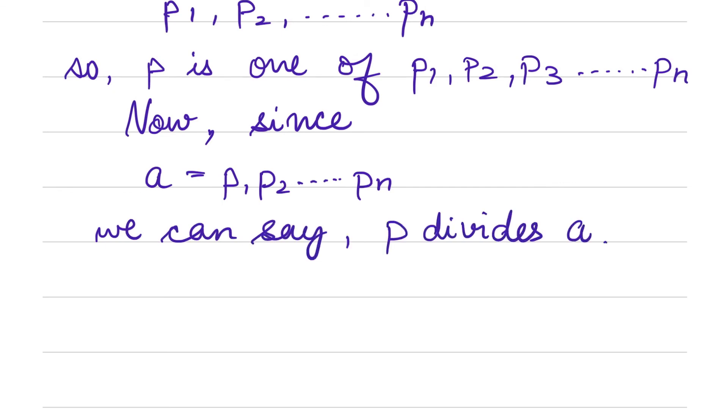In this way we have proved this theorem. This is a good concept here which would help us to really prove the irrationality of irrational numbers like √2, √3, and so on.